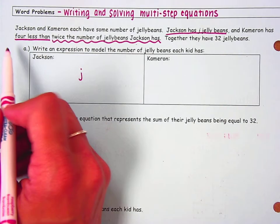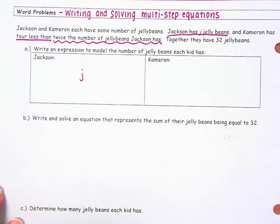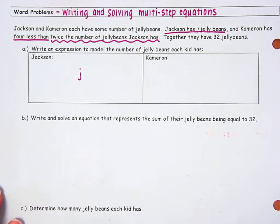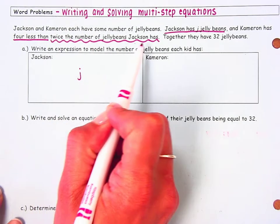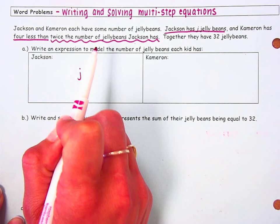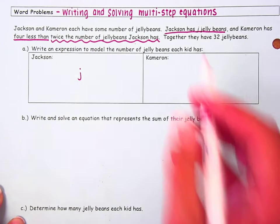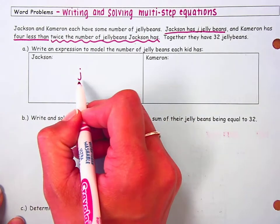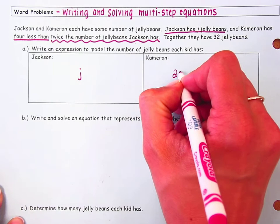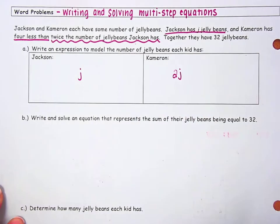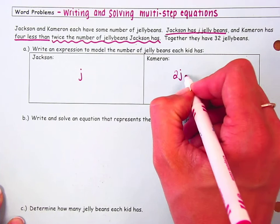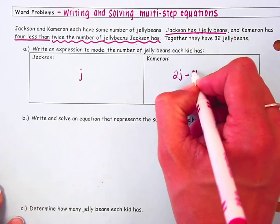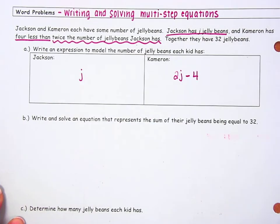We know that Cameron has 4 less than twice the number of jelly beans that Jackson has. I'm going to start with twice the number of jelly beans Jackson has. Twice means times 2, so we know Cameron has 2 times what Jackson has, which is J. So 2 times J, and we know he has 4 less than that, which means we're going to subtract 4 from 2 times the number that Jackson has.